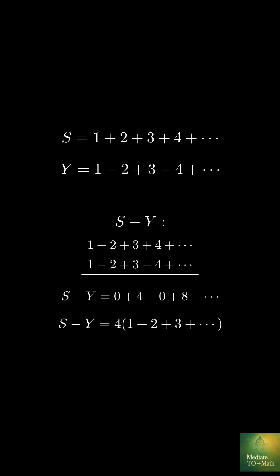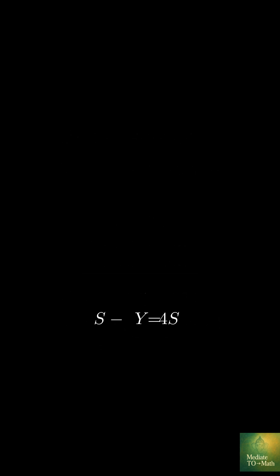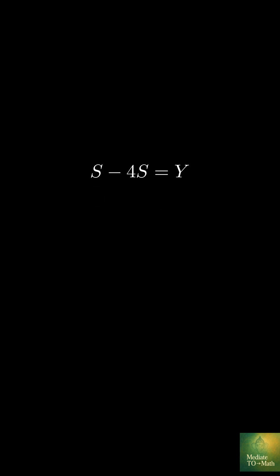And so on. This is just 4 times 1 plus 2 plus 3 plus 4 and so on. That's 4 times s. So s minus y equals 4s. Let's rearrange this. S minus 4s equals y. So negative 3s equals y.